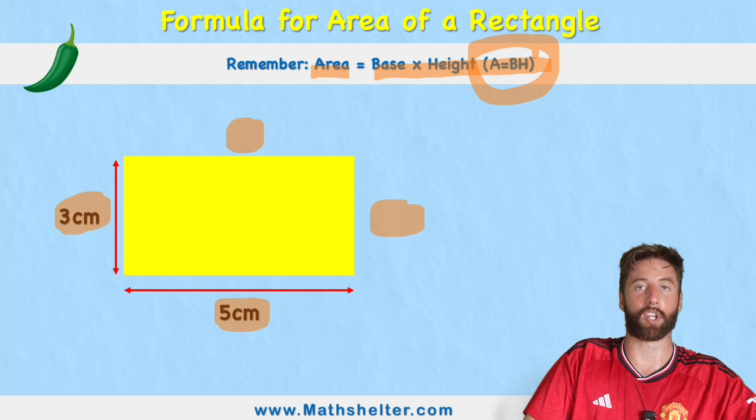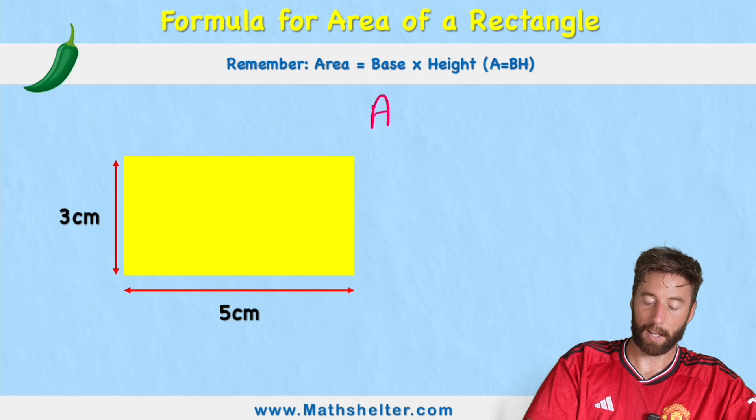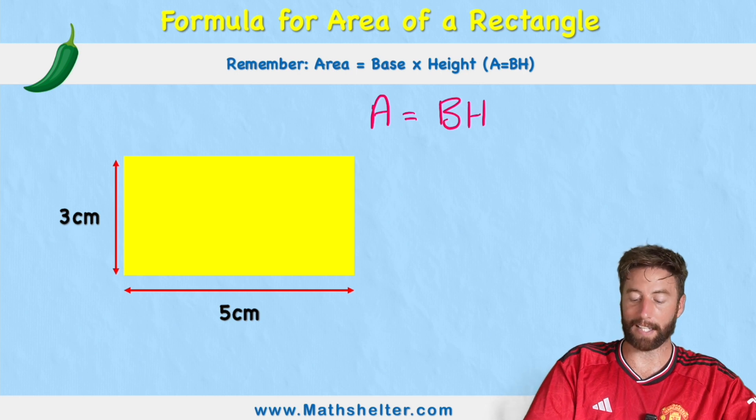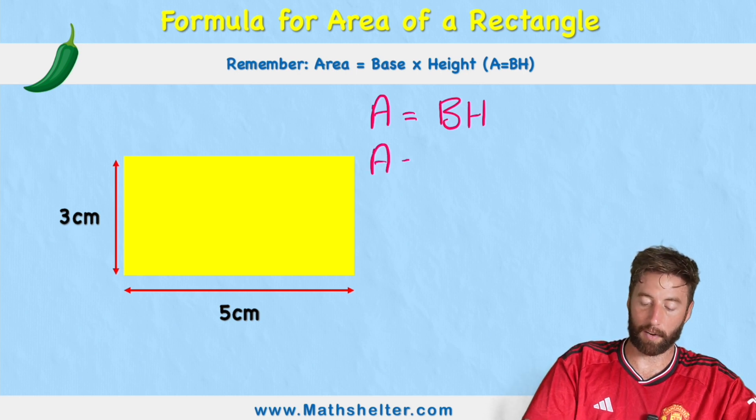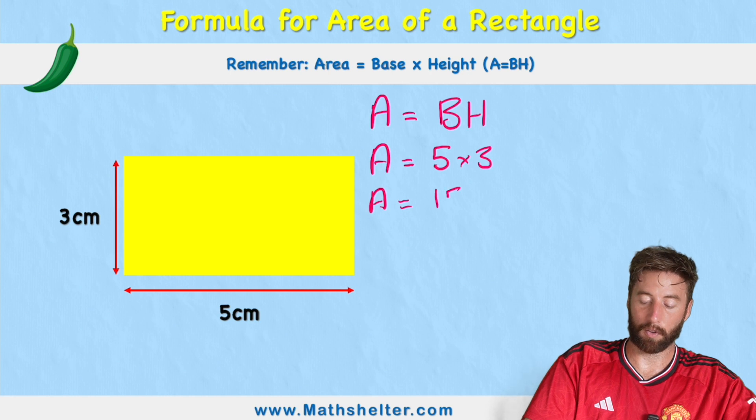But it wouldn't matter if it was on the other side either. So when writing my answer, I'm going to start with my formula. Area equals base times height. And then I'm simply going to substitute these letters with numbers. So area equals 5 times 3. So therefore, area equals 15.